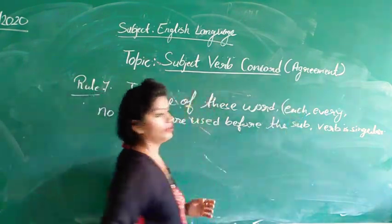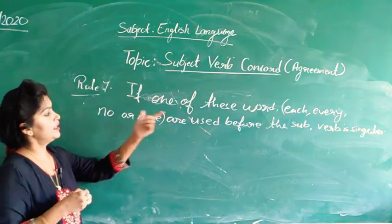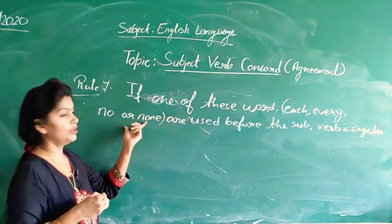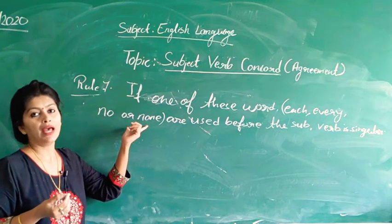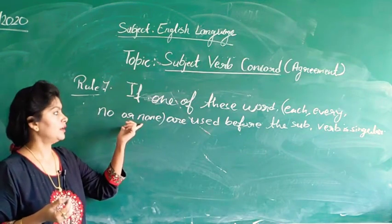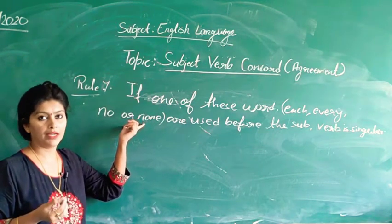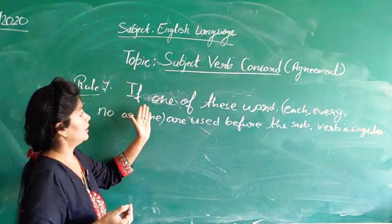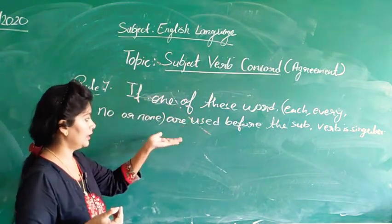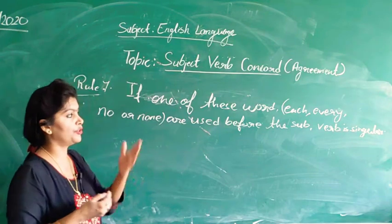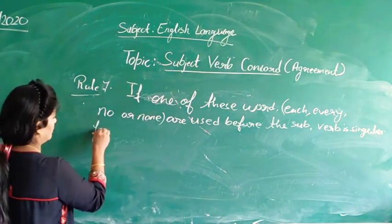Each, every, no, or none — in simple words, these are our adjectives of number, indefinite. So if one of these words — each, every, no, or none — are used before your subject, the verb is singular.